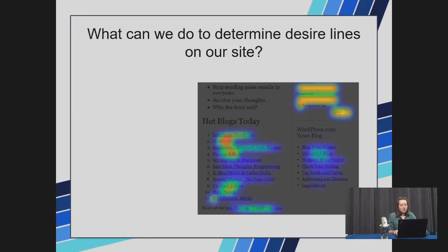What can we do to determine desired lines on your site? First, there's in-site search. This is probably the best part to understand your audience. When people type something into a search engine, they are telling you what they want and what they desire.